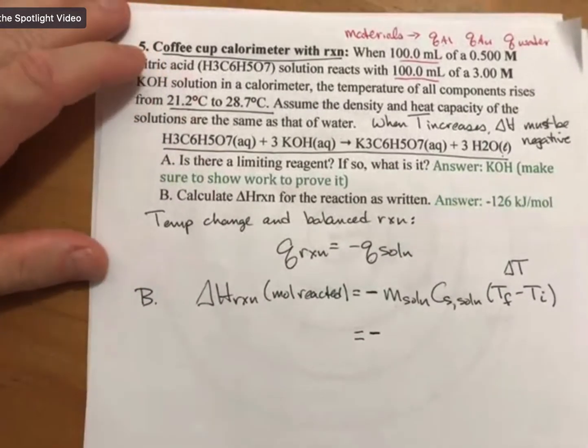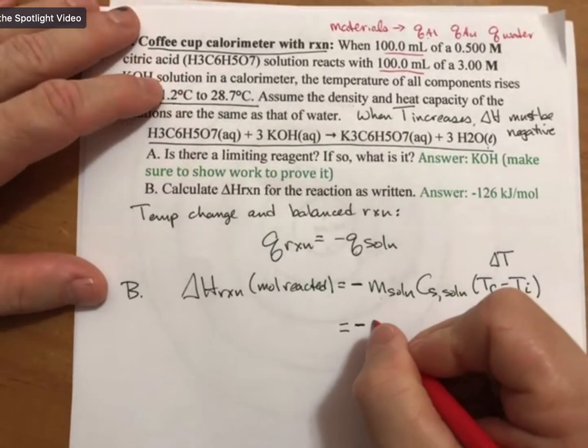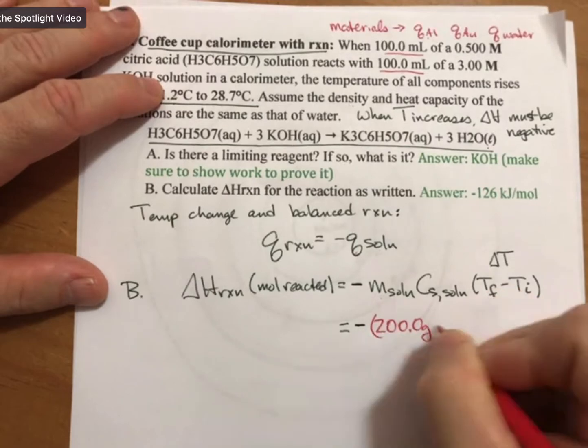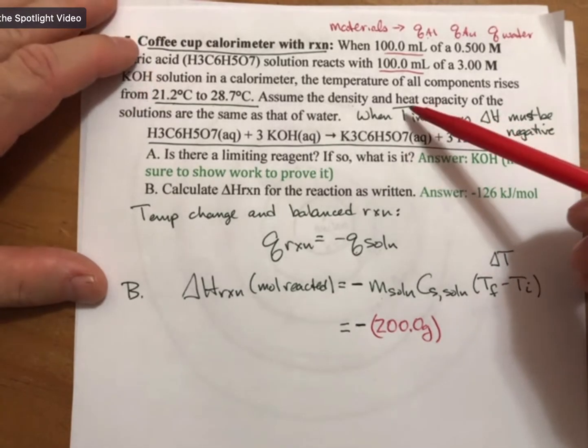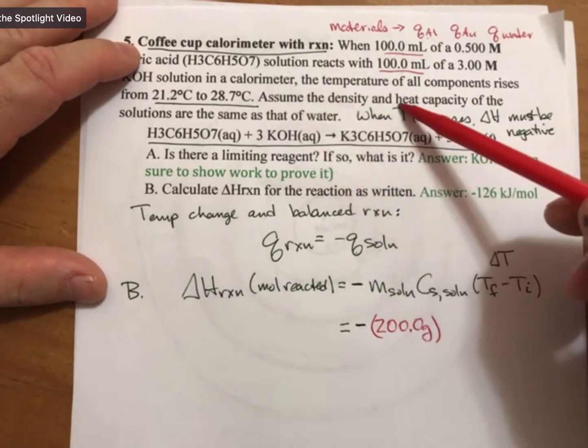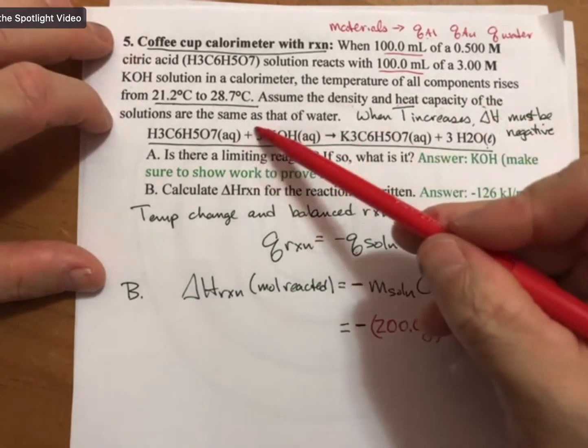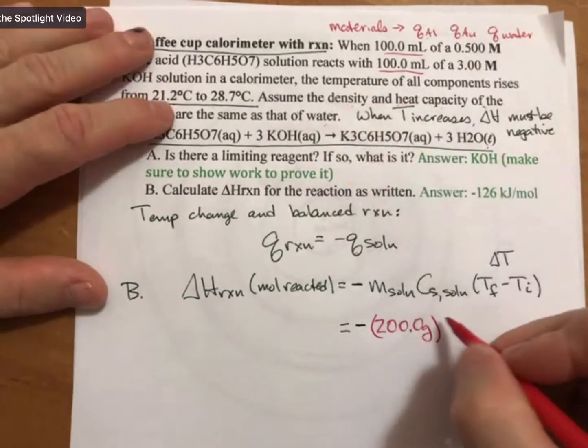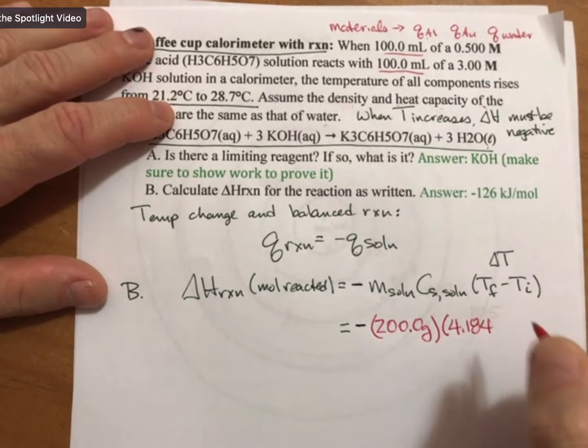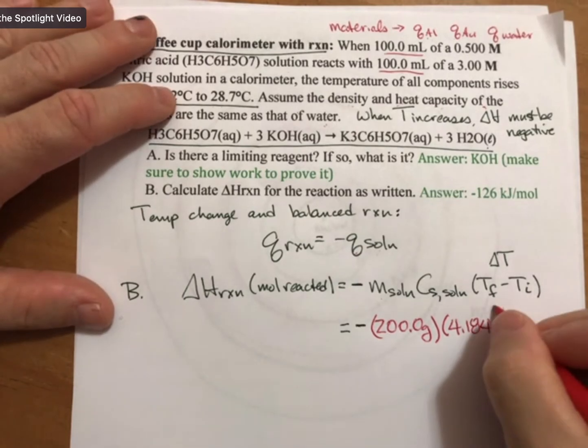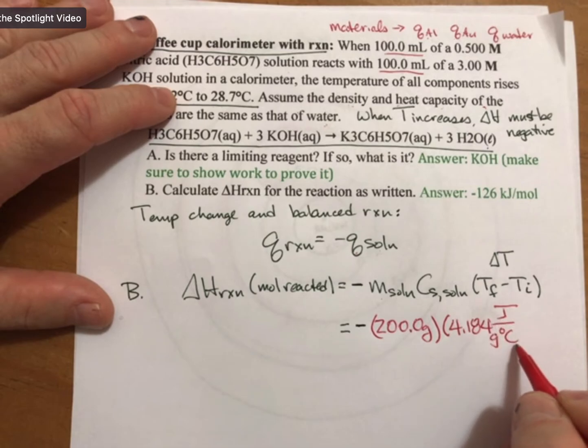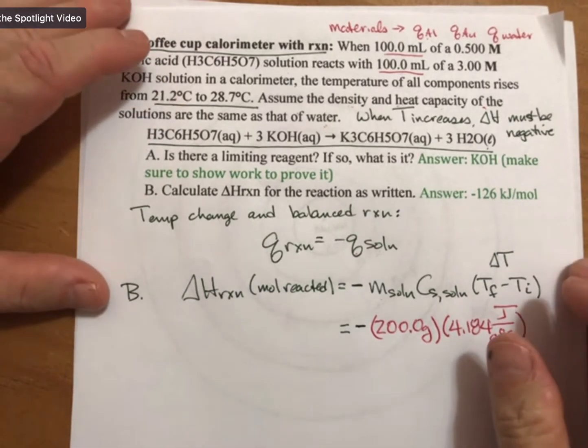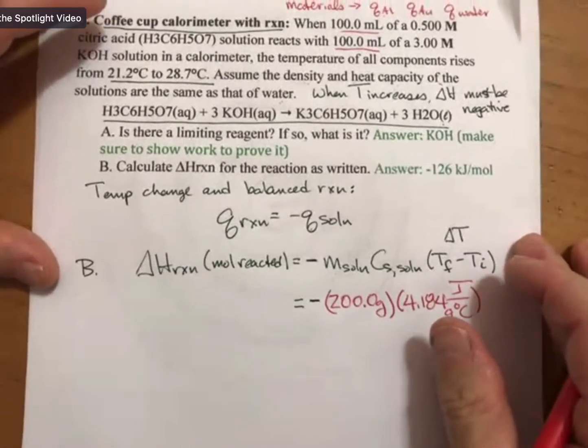So that's a note for this problem. Are there any questions about that? So there's my 200 grams. Now it says also, you may assume the heat capacity of the solution is the same as that of water. My heat capacity, which is on my conversion equation sheet for water, is 4.184 joules per gram degree Celsius.